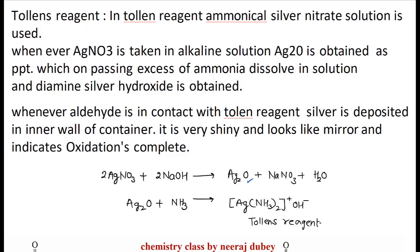Hello students, in this class we are going to discuss Tollens' reagent, Fehling's reagent, Benedict's reagent, and Brady's reagent. We are discussing oxidation of aldehyde. In Tollens' reagent, ammoniacal silver nitrate solution is used. Whenever silver nitrate is taken in alkaline solution, silver oxide (Ag2O) is obtained as a precipitate.